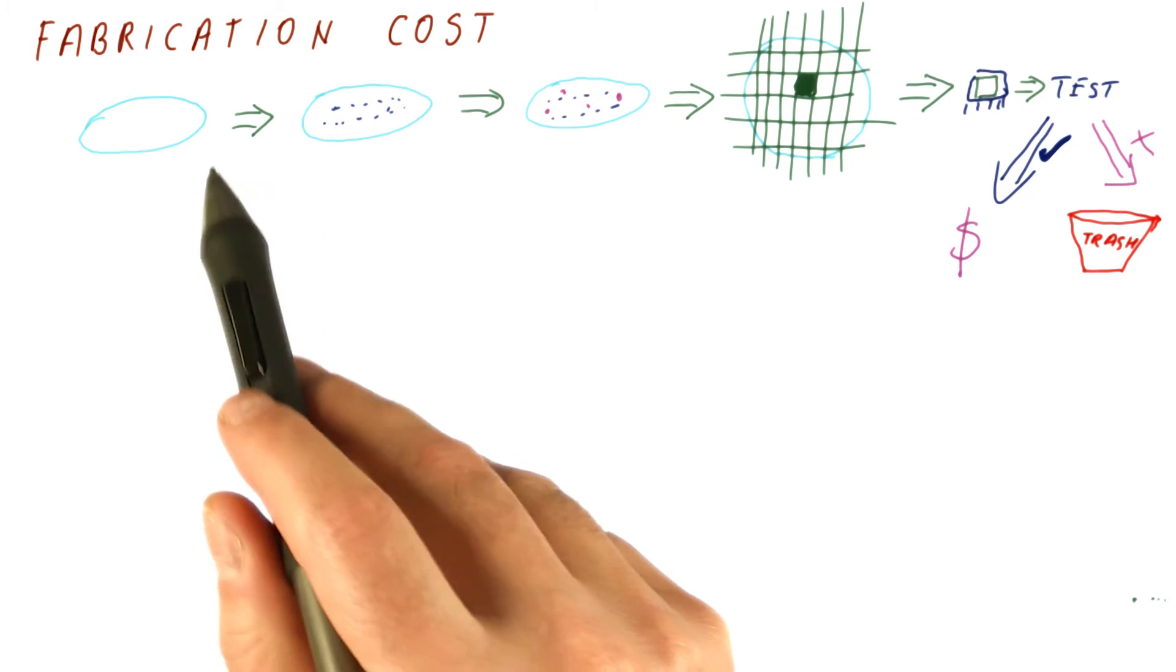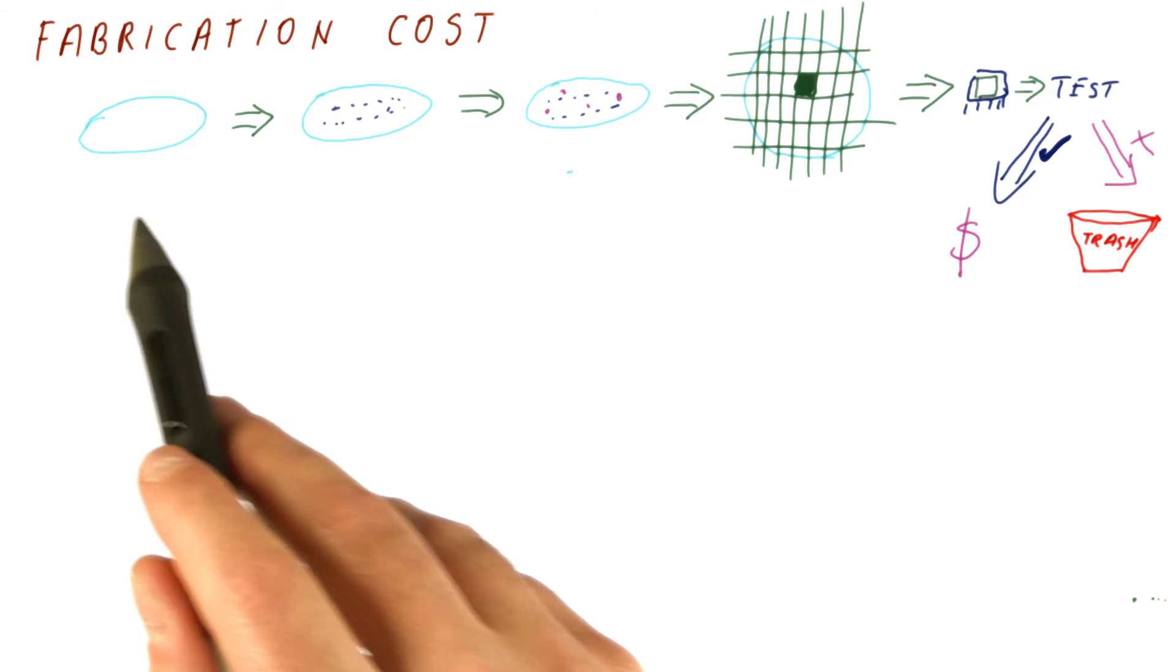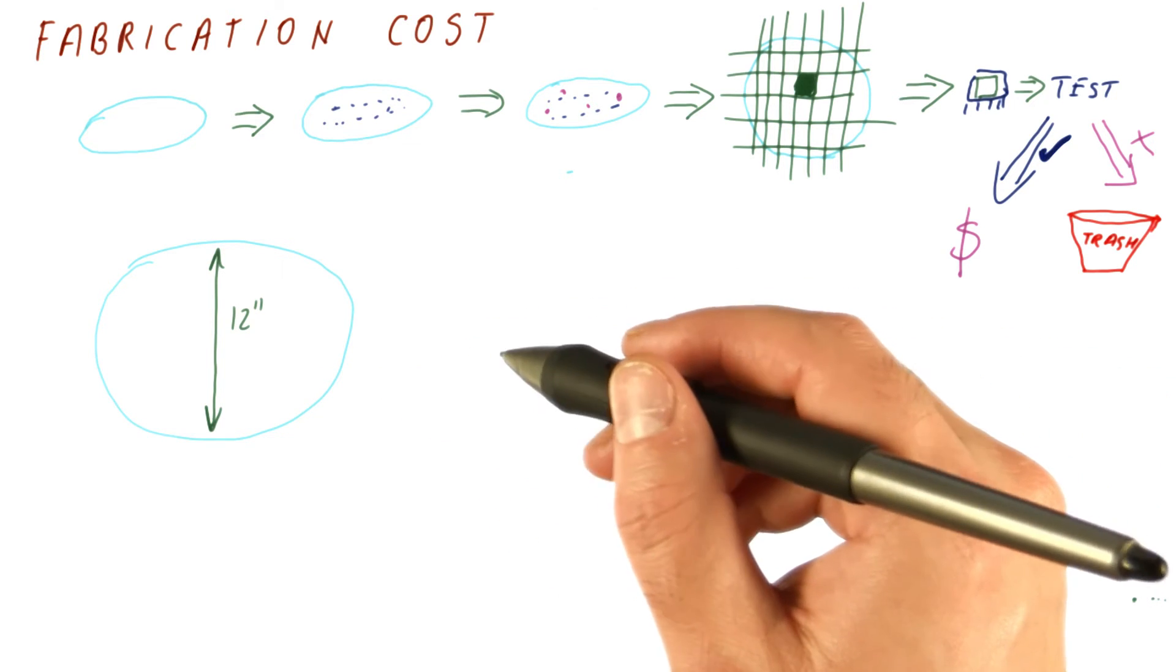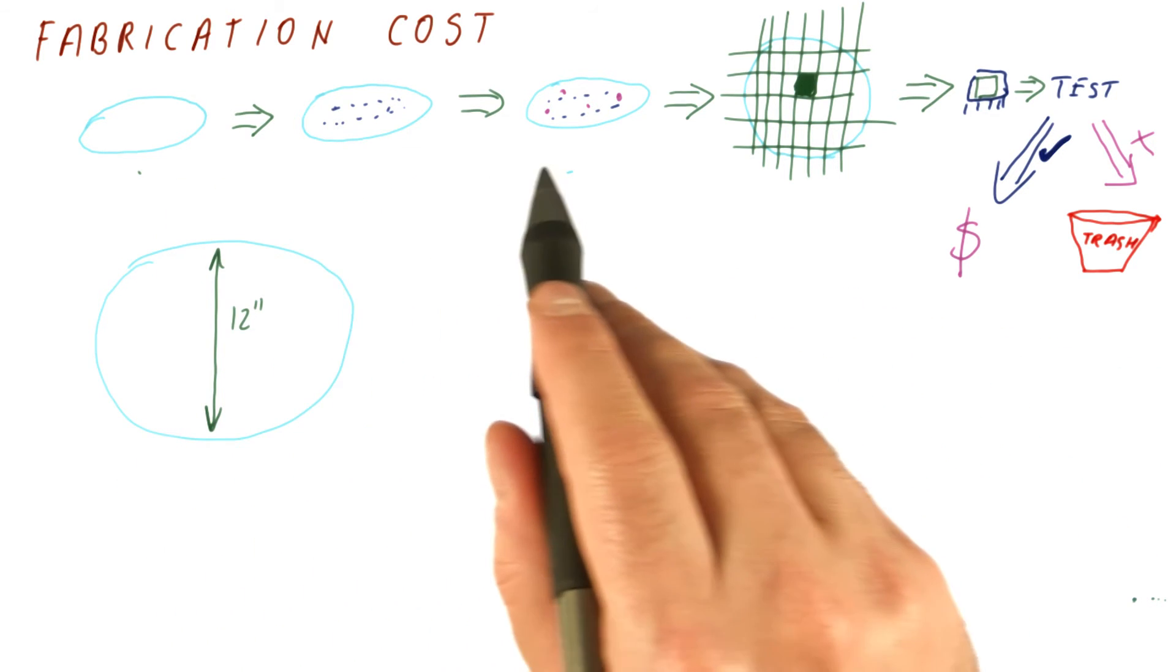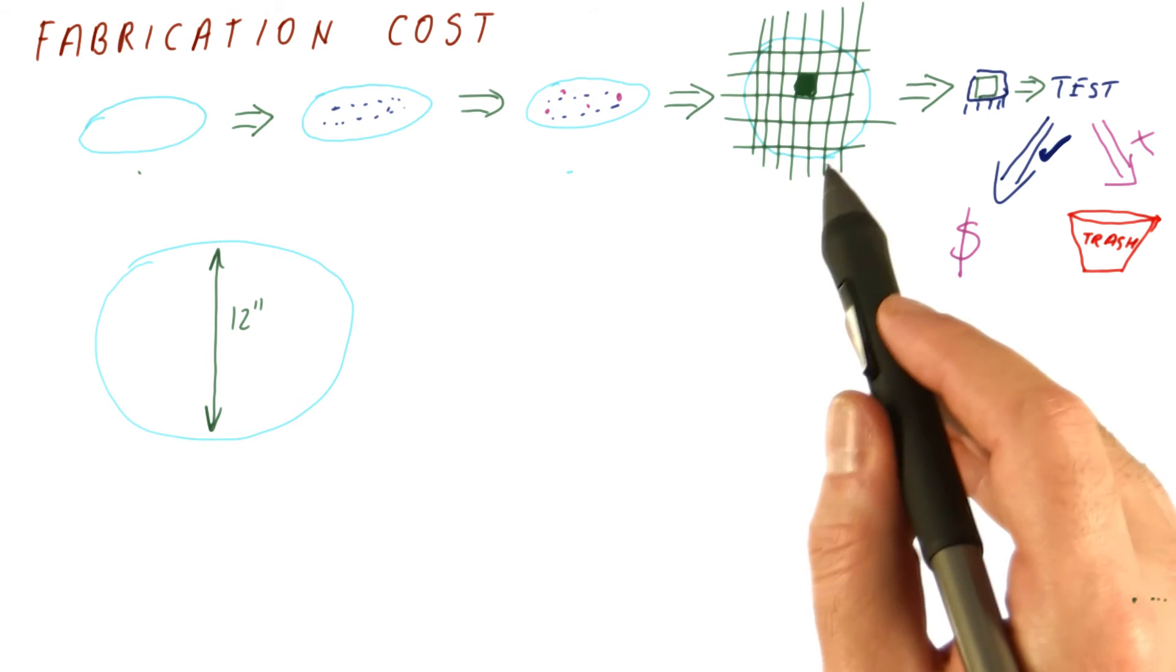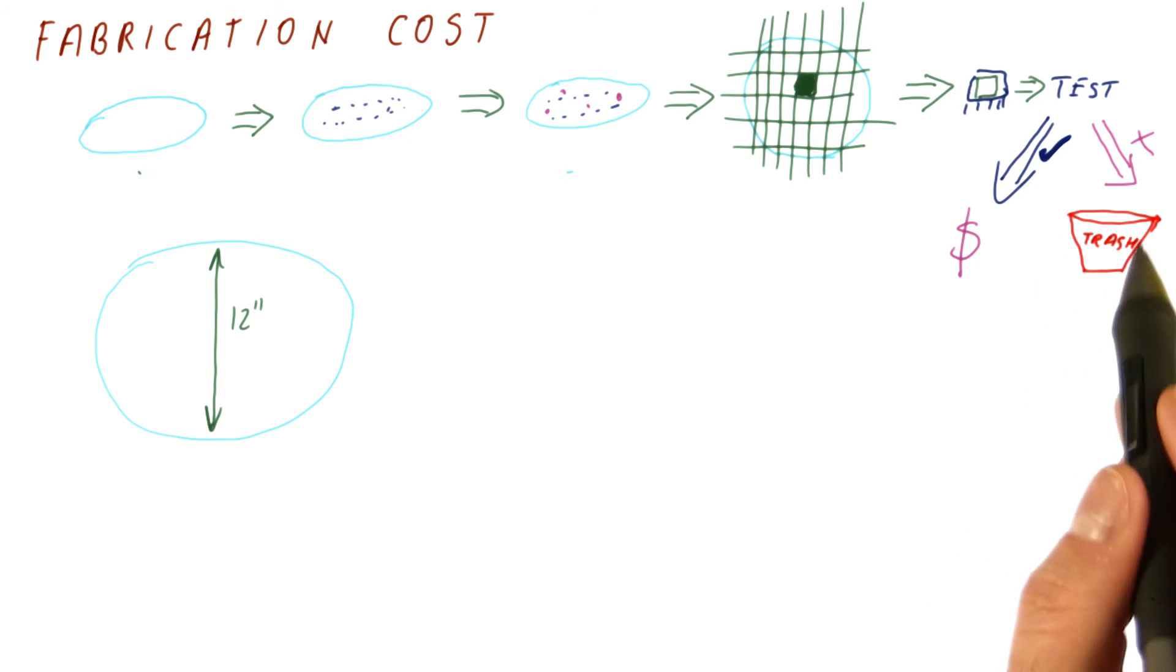It is important to understand that the manufacturing process up to cutting the chips up is all the same. The wafer, this disk, is about 12 inches in diameter. It costs thousands of dollars to put it through the manufacturing process, at which point we hope we get a number of working chips and very few non-working chips.